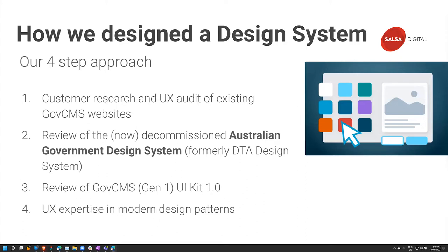So how did we go about designing this? We did a four-step approach. We did customer research and user experience testing and auditing of existing GovCMS websites, which gave us an idea of what patterns were common for the design system to serve the client base. We also found it quite important to ground all the work using the Australian Government Design System - now decommissioned - as a base that was already well built and well designed. That was a good base to look at what components we could uplift and build into this design system for the common library.